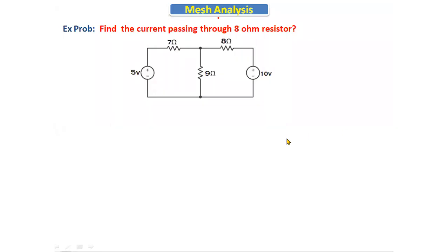Hello everyone. Today we will discuss one problem: find the current passing through an 8 ohm resistor in a given circuit. In previous classes we discussed problems by taking the clockwise direction for two loops, or both loops anticlockwise, or one clockwise and one anticlockwise. We saw how to write the mesh equations and get the answer.